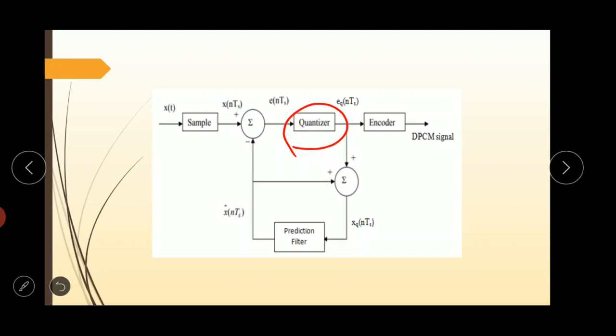Then the EQ of NTS and X cap NTS is added. This one is the adder. Here we add the EQ of NTS and X cap NTS. This value is given here and this value is given here. And here both the signals are added and given as input to the prediction filter. The adder output is given as input to the prediction filter. The output of the adder signal is called XQ of NTS.